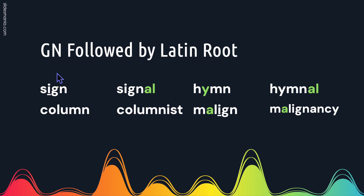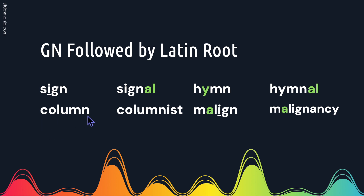If you have G-N followed by a Latin root, the N can also have its sound. Like here we have the word sign with a long I and a silent N, and we add the suffix -al and it becomes signal. Most of the time -al at the end of a word takes on the muffled ul sound. This Y is between two consonants and will have a short I sound, so this is hymn with a silent N. Here we add the suffix -al to get hymnal where you can clearly hear the N sound. Here we have column with a silent N, and when we add the suffix -ist it becomes columnist.